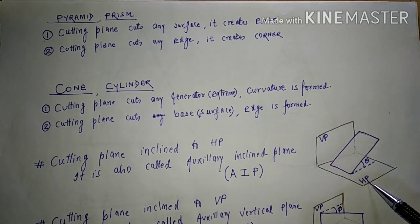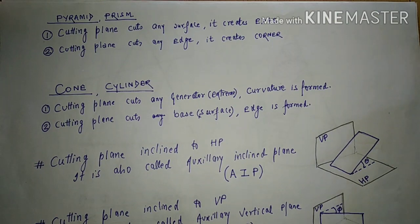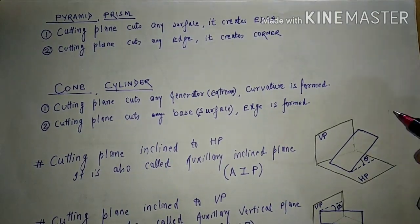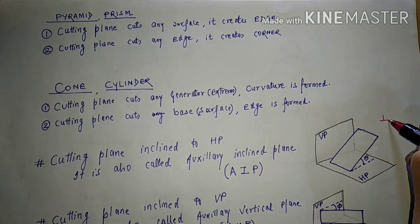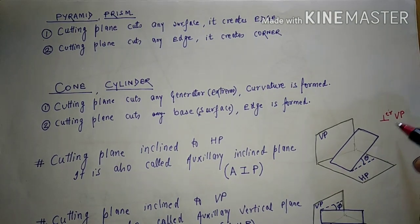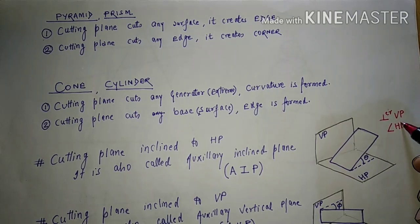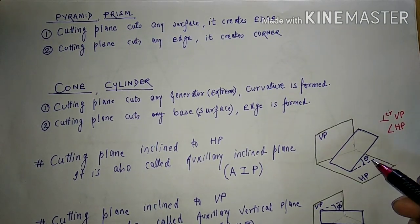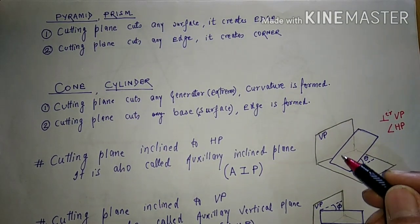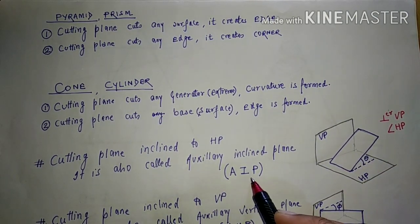Consider the vertical plane and horizontal plane. If this cutting plane is inclined to HP and perpendicular to VP, it is called an auxiliary inclined plane, represented as AIP.